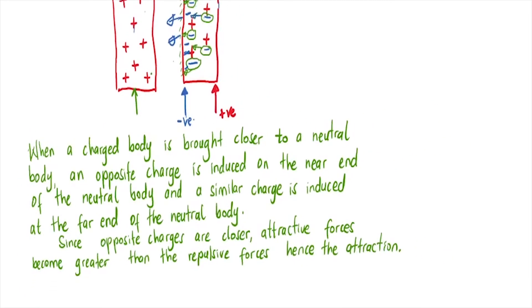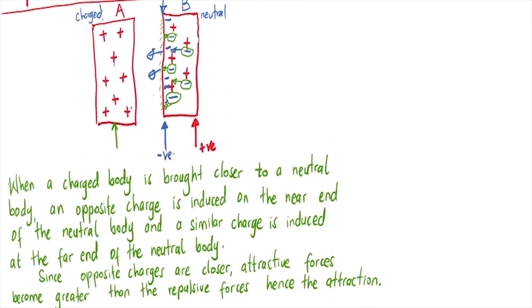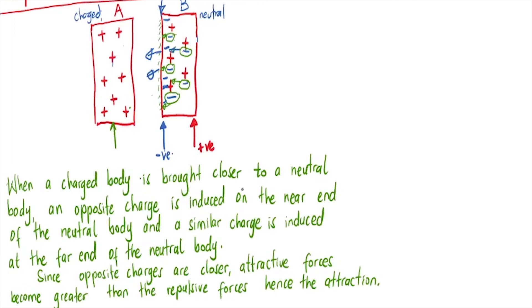Just to throw more light on this explanation: when a charged body is brought closer to a neutral body, an opposite charge is induced on the near end. In this case, the charged body is a positive charge, so the opposite charge being induced on the near end is the negative charge, as you can see there.